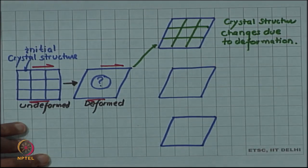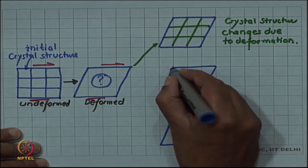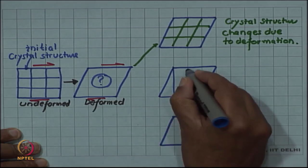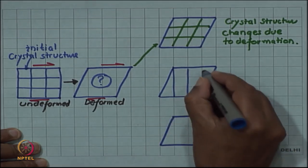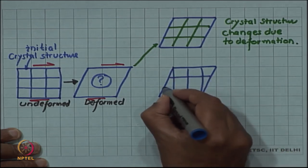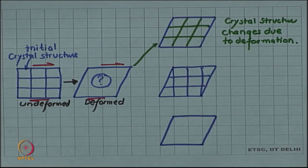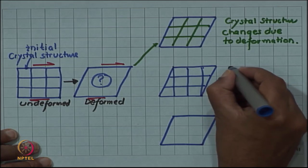I can take another view and I can say that no, the crystal structure is some sort of inherent material property and this does not change due to plastic deformation. The crystal structure remains intact. A given material will have a given crystal structure irrespective of whether it is deformed or not. If I take this view and say that the crystal structure has not changed, then I am saying no change in crystal structure.